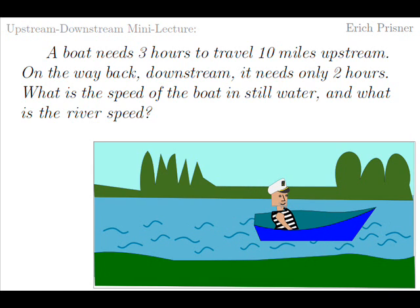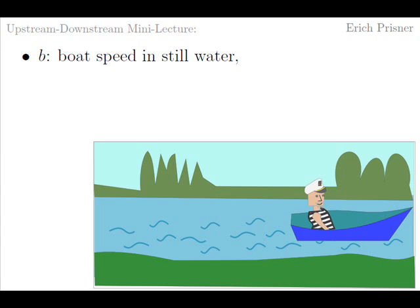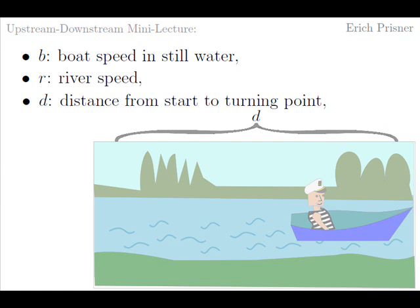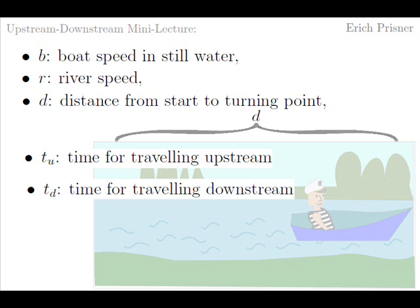In such a problem there are 5 quantities. The speed of the boat in still water, which we call b. The speed r of the river. The distance d between starting point and turning point. So the total distance travelled is 2d. The time for travelling upstream we may want to denote by tu with a subscript u for up. And the time for travelling downstream by a td with a subscript d for down.